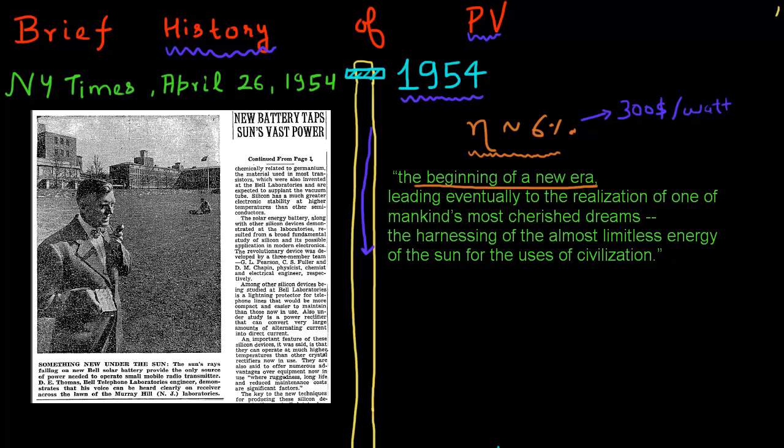To make this number relevant, we must compare it with the cost of producing that same watt of energy using a conventional coal-powered plant, which was 50 cents a watt. Solar energy was 600 times more expensive in terms of install costs to produce that same watt of energy.